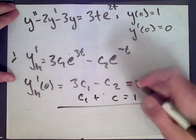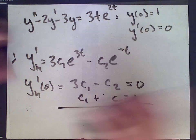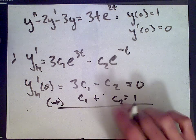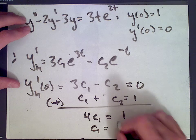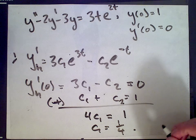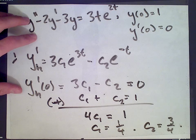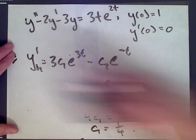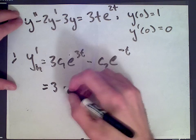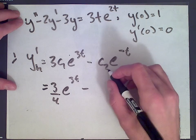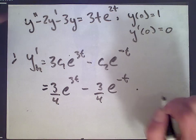So the system is: c1 plus c2 equals 1, and 3c1 minus c2 equals 0. We can eliminate the variable c2 by adding the equations. We get 4c1 equals 1, so c1 equals 1 over 4. In that case, c2 from equation 1 must be 3 over 4.